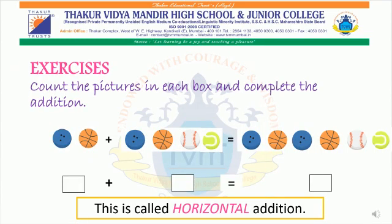Now let us move on to the exercises. Count the pictures in each box and complete the addition. Two balls plus four balls equals six balls. When we arrange the numbers in a sleeping line and do the addition, it is called horizontal addition.